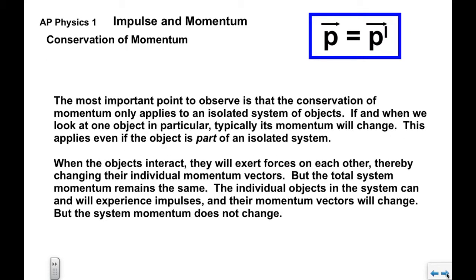Now again, the most important point to observe about the conservation of momentum is that it only applies to an isolated system of objects. If and when we look at one object in particular, one object in the system, its momentum will change. This applies even if the object is part of an isolated system. When the objects interact, they will probably exert forces on each other, and as a result their individual momentum vectors will change, but the total system momentum remains the same.